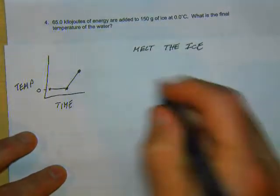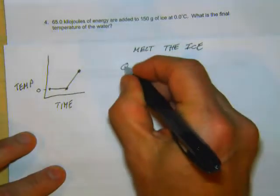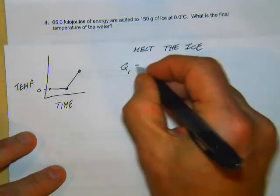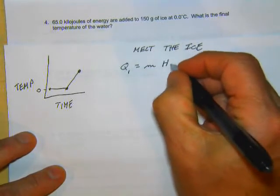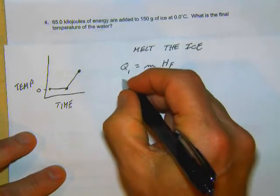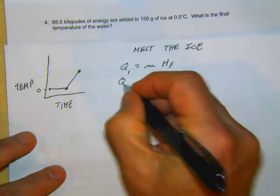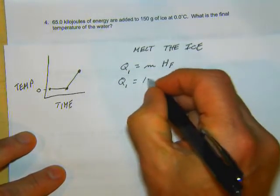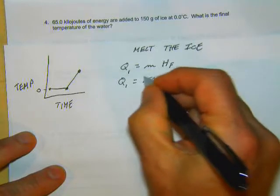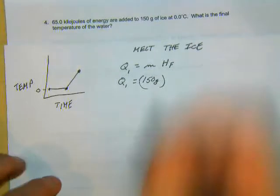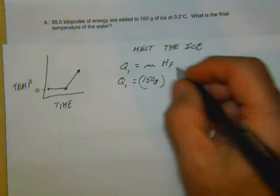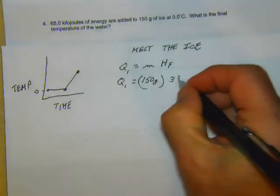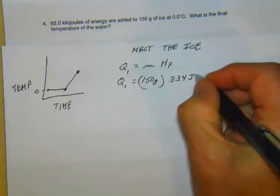Well to do that we're going to use and we're going to call this Q1 and we're going to say M times the heat of fusion. So we know we got 150. So Q1 equals 150 grams. And the heat of fusion is 334 joules per gram.